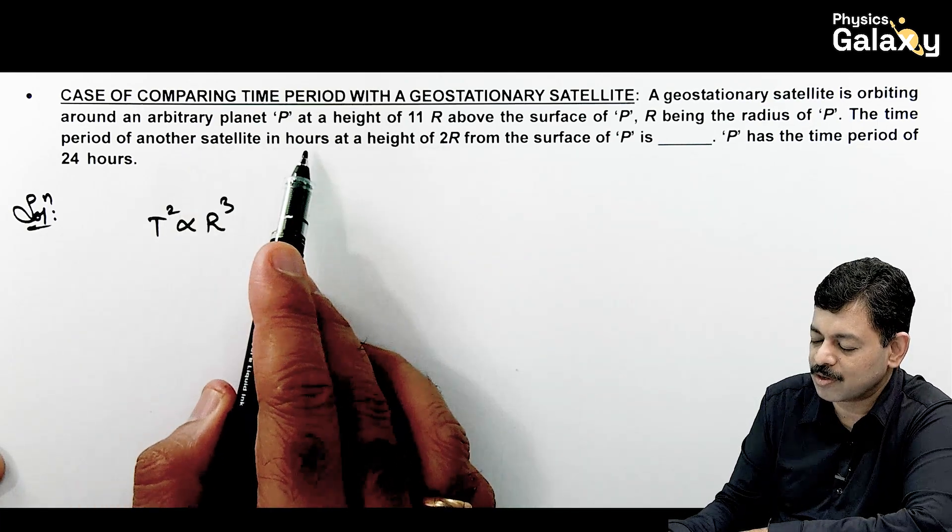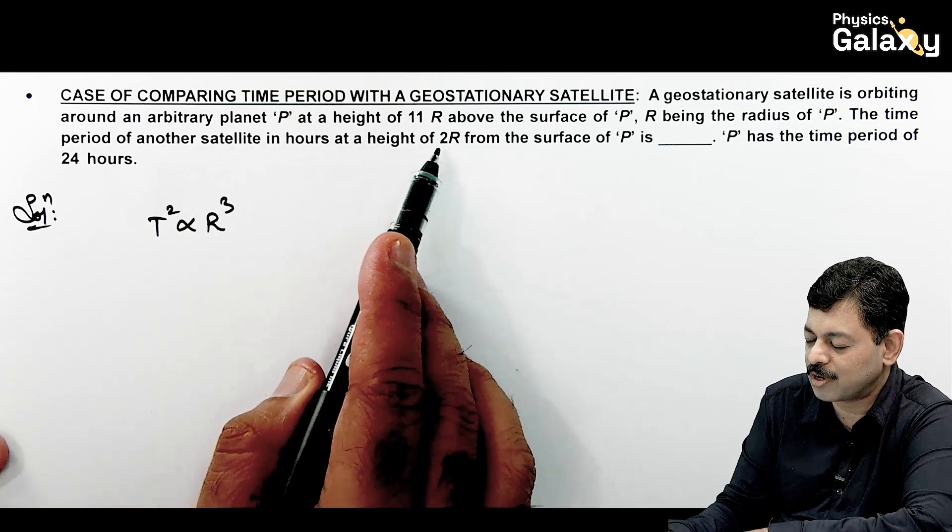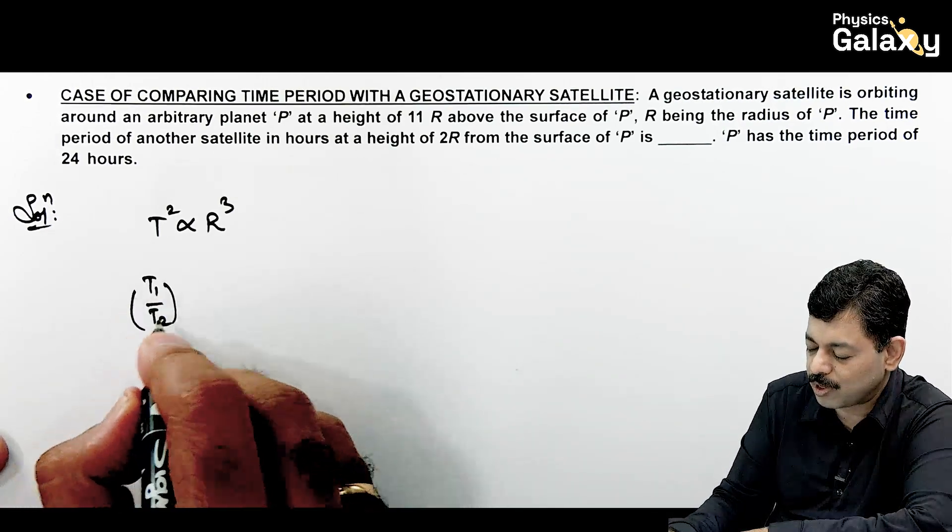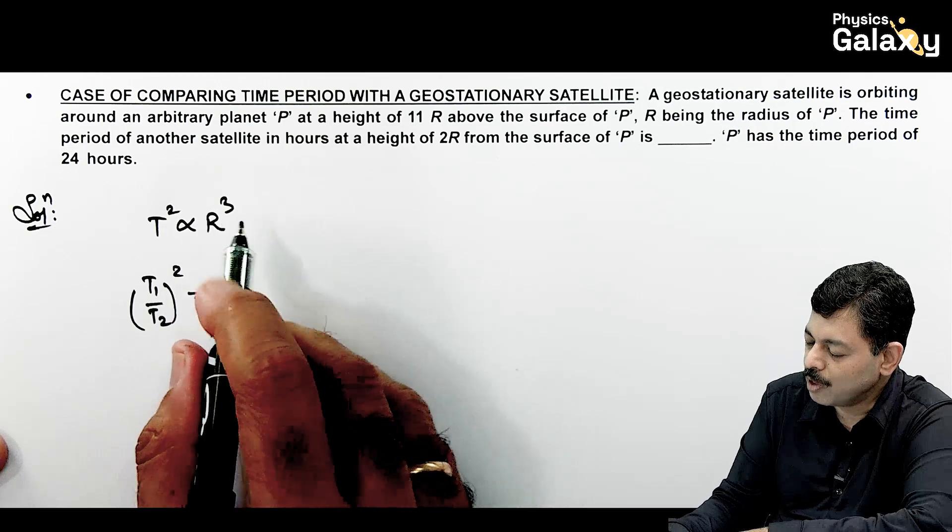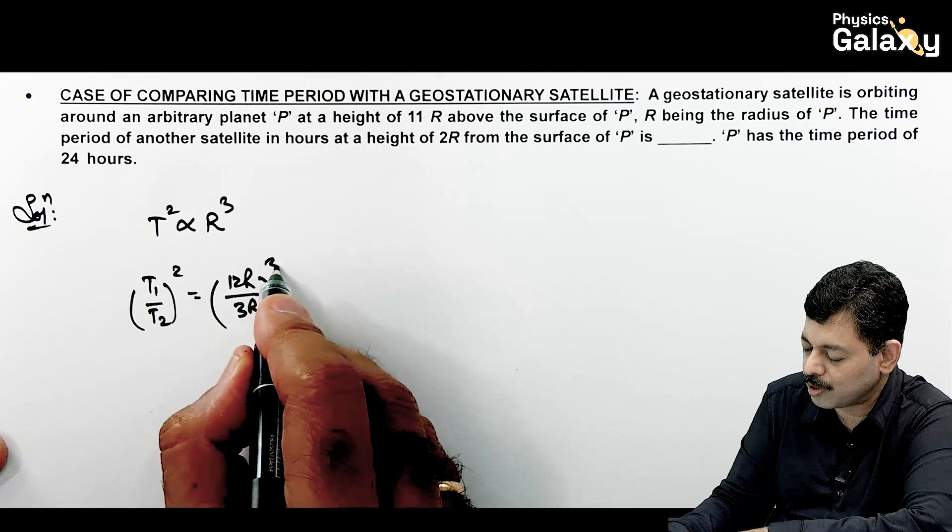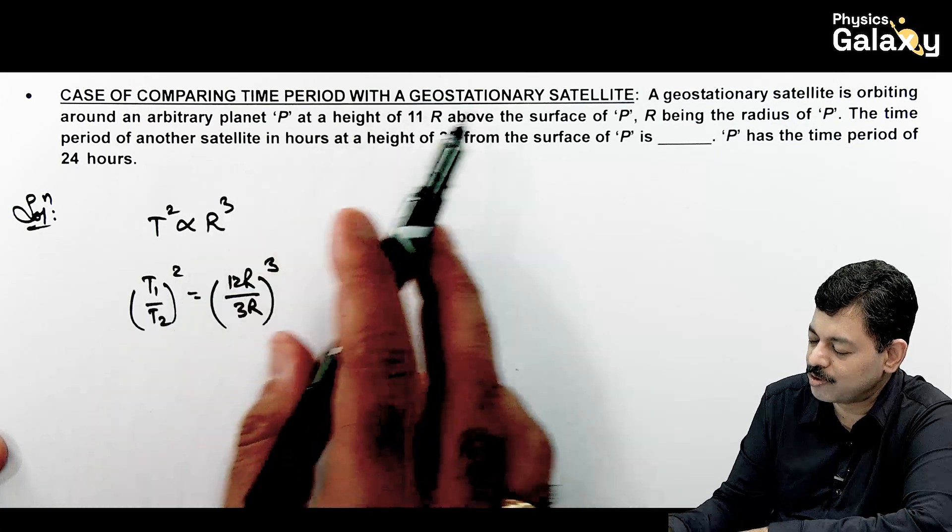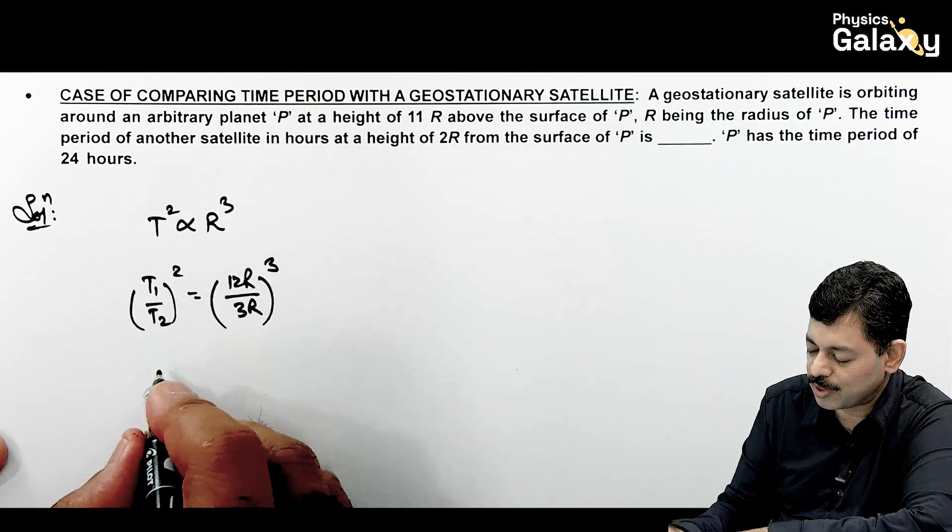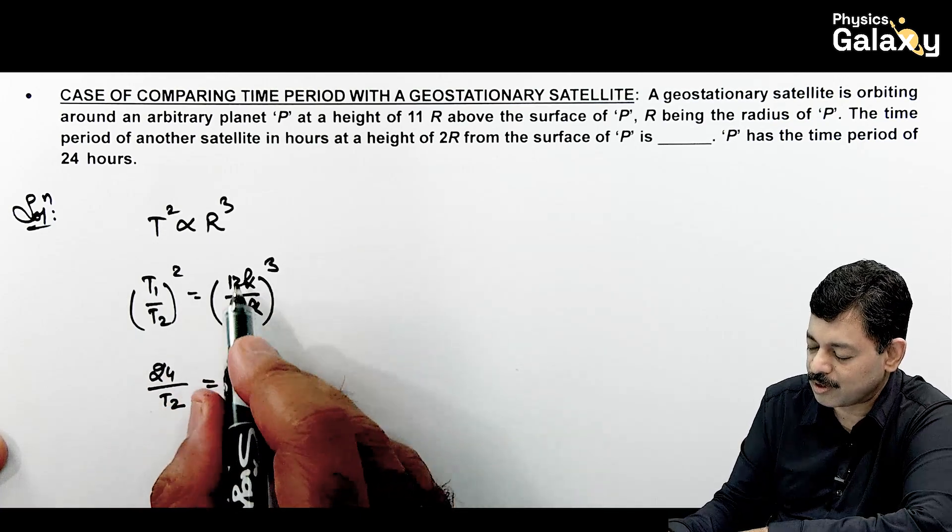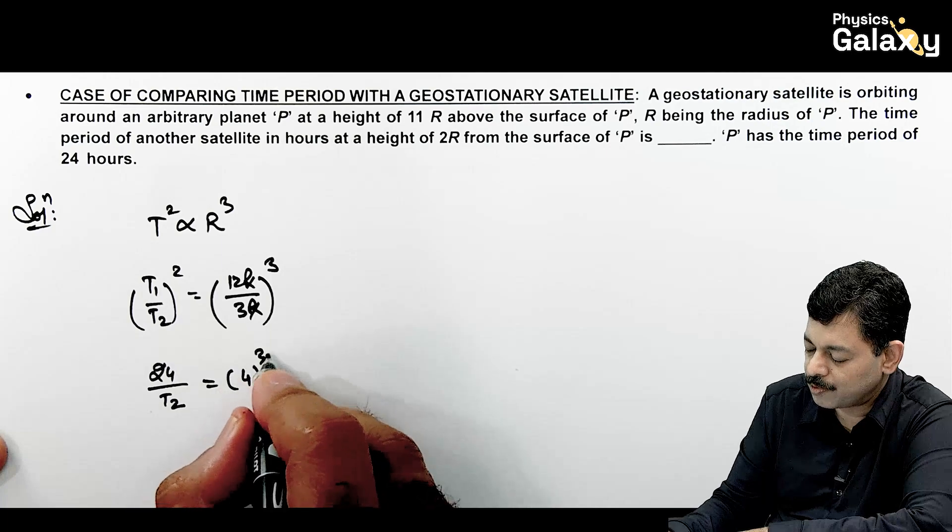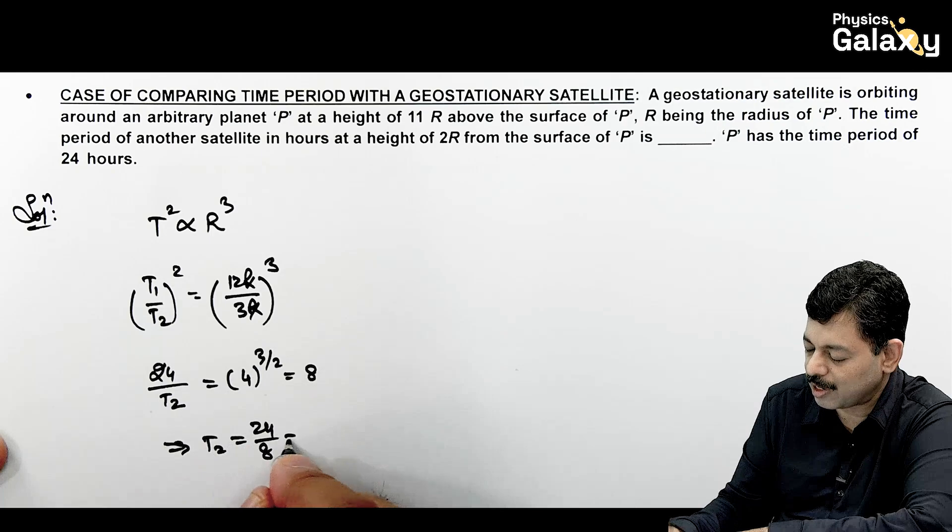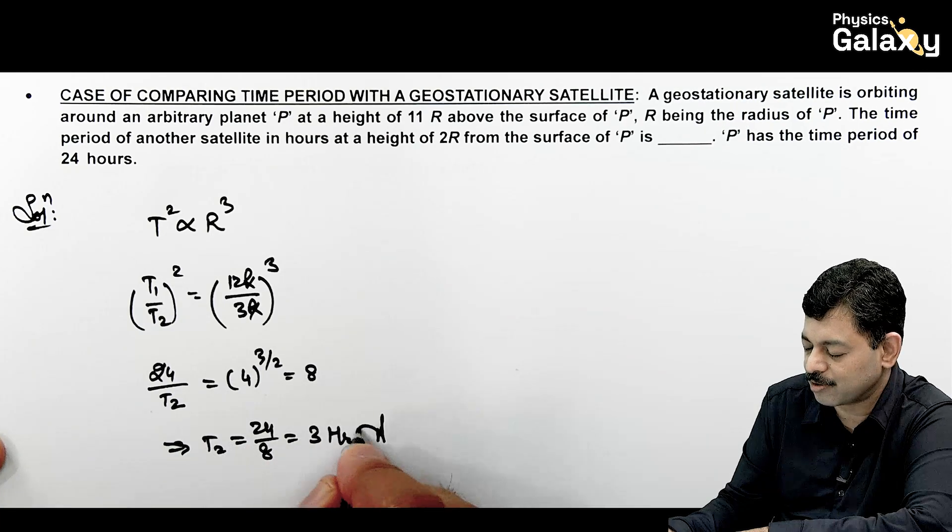The time period of another satellite at height 2R from the surface of P—its orbit radius is 3R. So T1/T2 squared equals (12R)³/(3R)³. T1 is the geostationary satellite with period 24 hours. So 24/T2 squared equals (4)³ = 8, which means T2 = 24/8 = 3 hours.